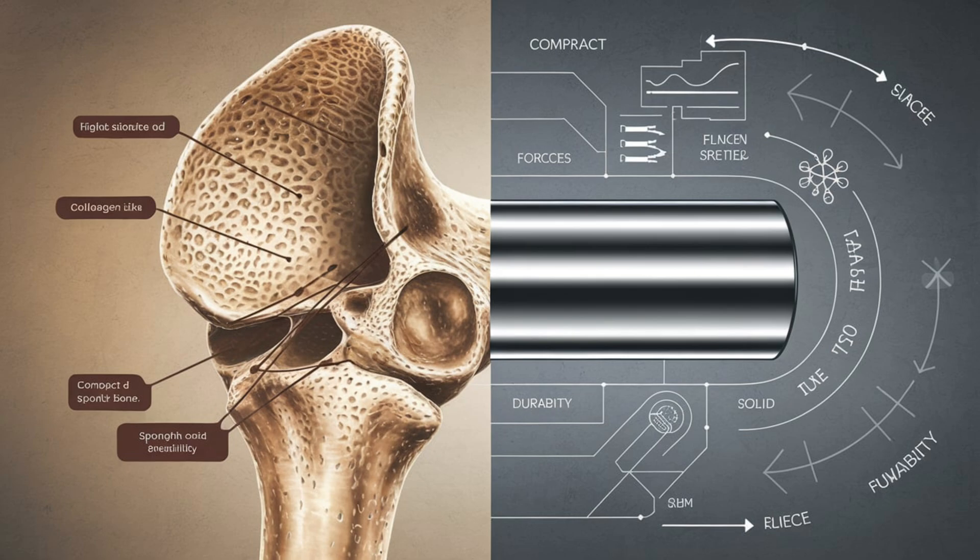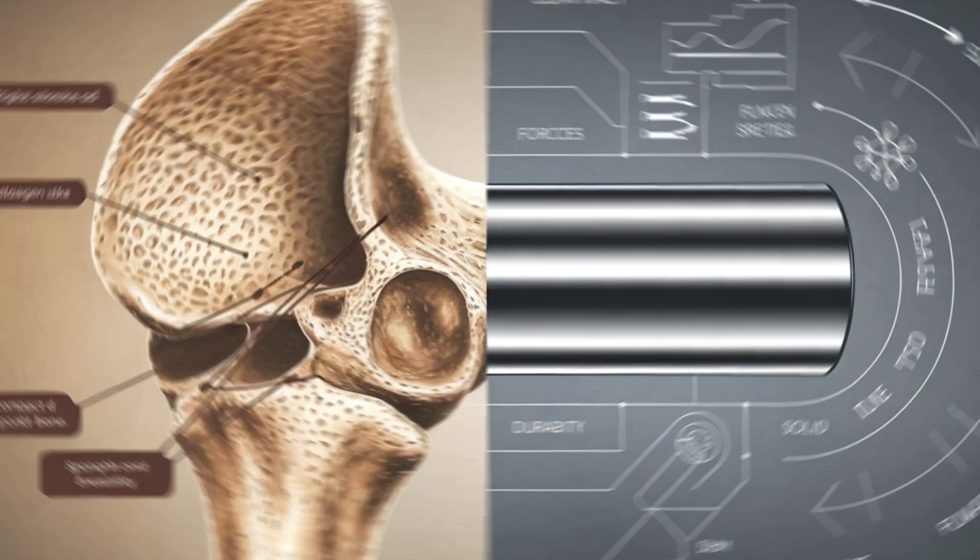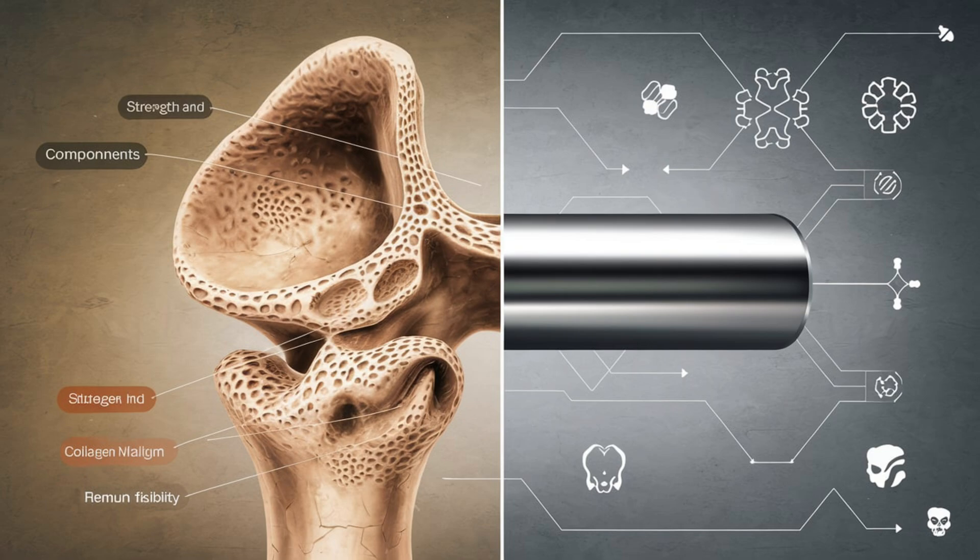Think of bones as a shock absorber for the body. The slight flexibility of bones prevents fractures from everyday movements and minor impacts, something steel lacks without additional modifications.